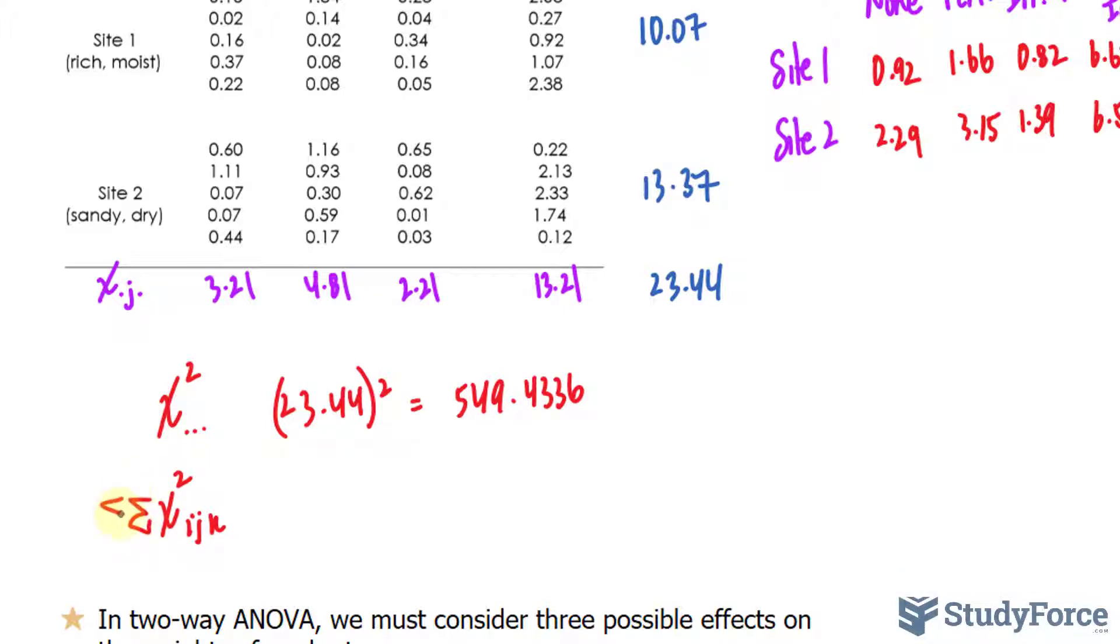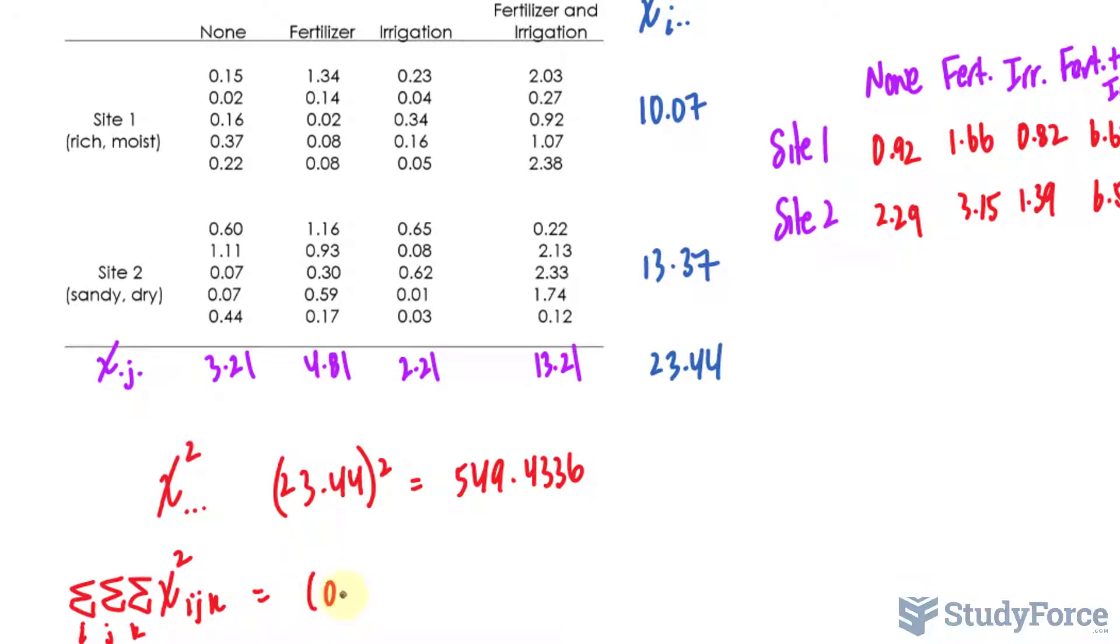Of course that would take a really long time to do by hand so make sure that you have a calculator handy or some program that should be able to get you these values quickly. So if I sum up each individual value, subscript i, j, k, square it and sum them, which I'll represent using this Greek letter sigma, i, j, k.